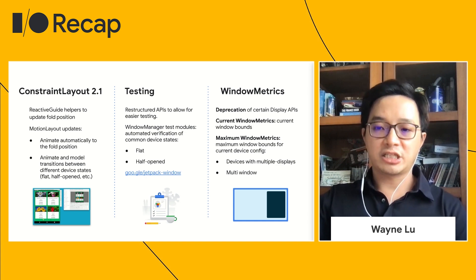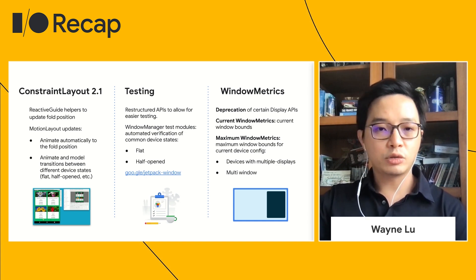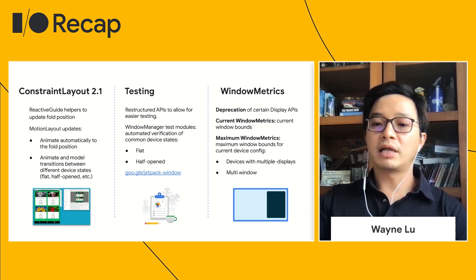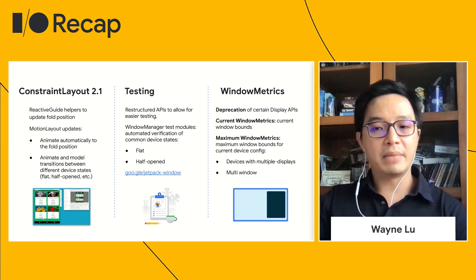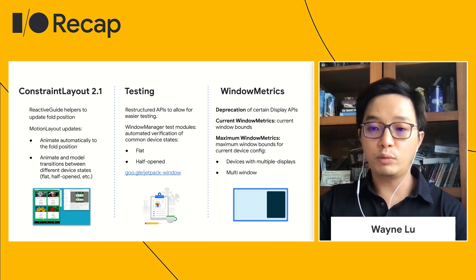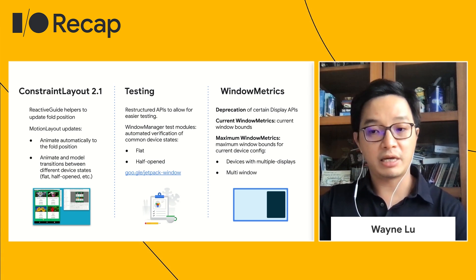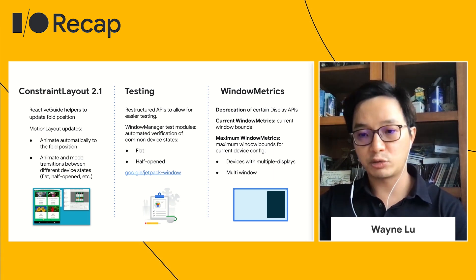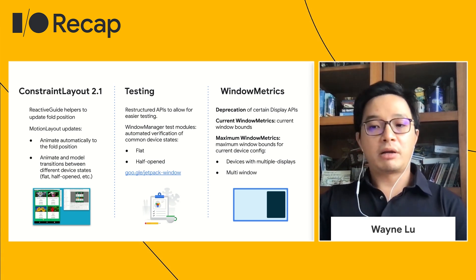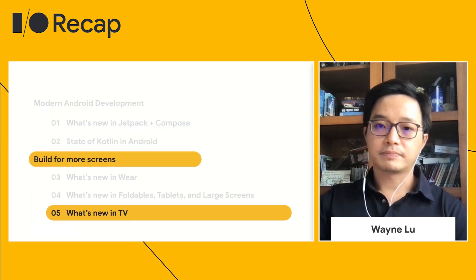You will be able to test experiences such as taking your layout into and out of tabletop mode. On large screens, your app may not always be full screen, and the window size may change. Hence, we have added new window metrics APIs — current and maximum window metrics — for you to retrieve the correct window size information.